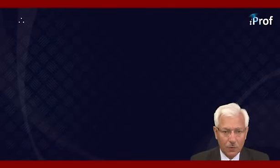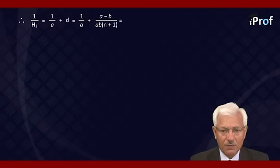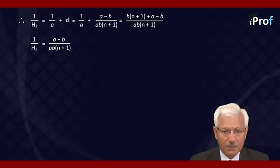One upon H1 is therefore the second term of the arithmetic progression, which becomes one upon A plus D. That is, one upon A plus A minus B upon AB(n+1), which becomes B(n+1) plus A minus B upon AB(n+1). Therefore, one upon H1 equals A plus nB upon AB(n+1), and so H1 equals AB(n+1) divided by A plus nB.